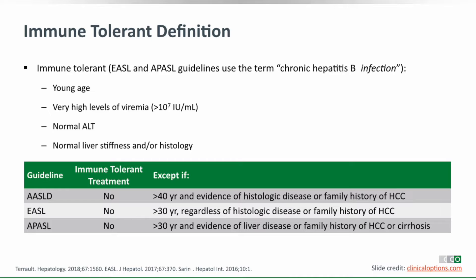The final factor is family history. If a patient has a family history of HCC in particular, all guidance documents recommend treatment regardless of ALT level or liver stiffness value — purely based on cancer risk. So immune-tolerant patients are generally not treated, with exceptions for older age, histological disease, or family history of liver cancer.